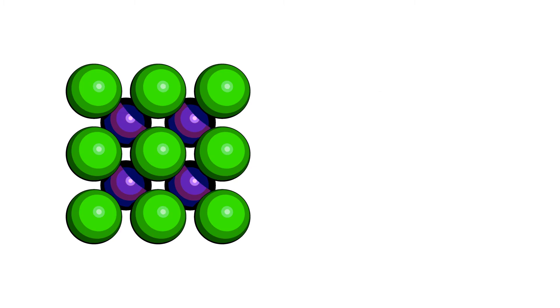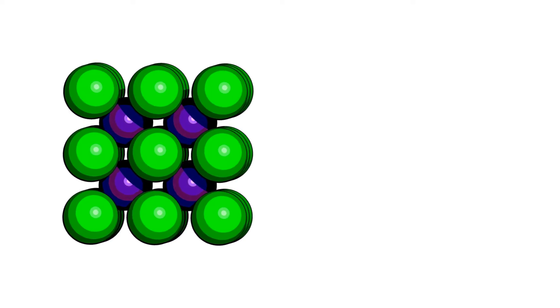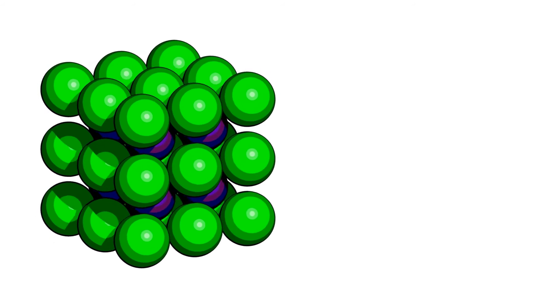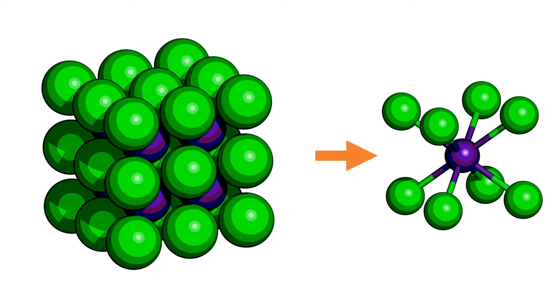In cesium chloride, the purple cesium and green chloride ions form interlocking primitive lattices that give the final CsCl unit cell. It should be noted that CsCl does not adopt a BCC unit cell as the ions are not all identical.